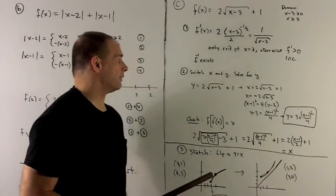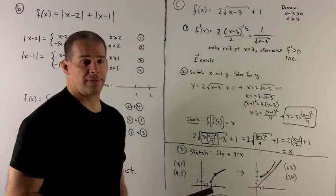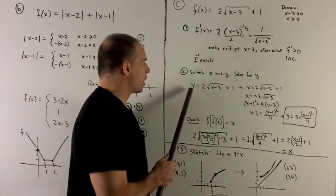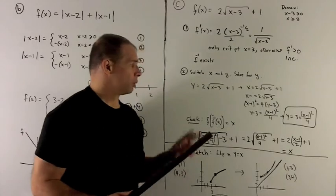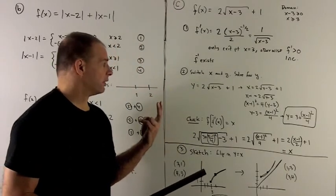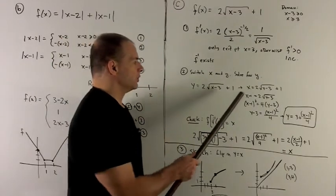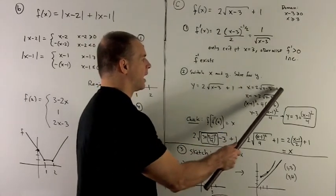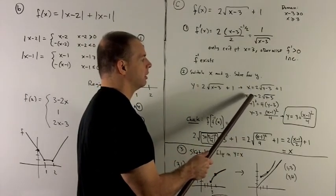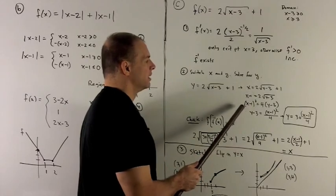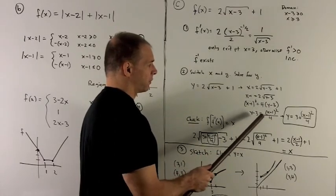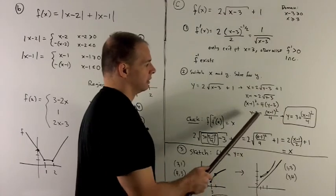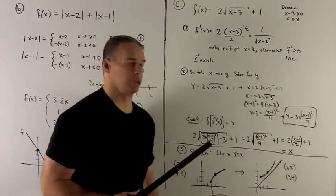Next, we want to solve to get the equation for f inverse. So I start with my y equals 2 times the square root of (x minus 3) plus 1. We're going to switch x and y, and then just solve for y. So we do our switch. I can move the minus 1 over to here. 1 goes as minus 1. Square both sides, and then we just move the 3 to the other side, 4 to the bottom, and that gives me my inverse function.